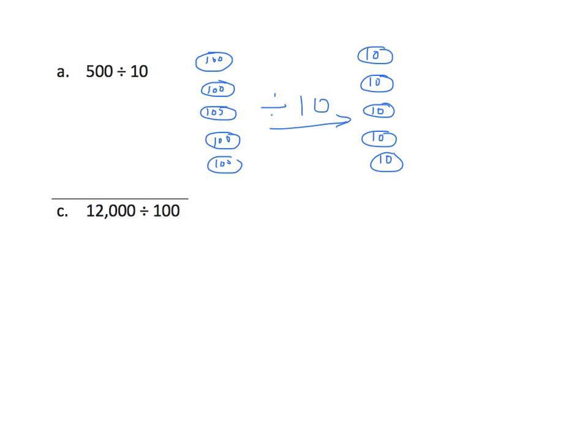So we finally write in the answer. 500 divided by 10 equals, I'll have to put that underneath, five tens. One, two, three, four, five. Five tens is 50.